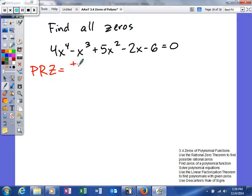So it's going to be the factors of our constant: plus or minus 1, plus or minus 2, plus or minus 3, plus or minus 6, over the factors of our leading coefficient.